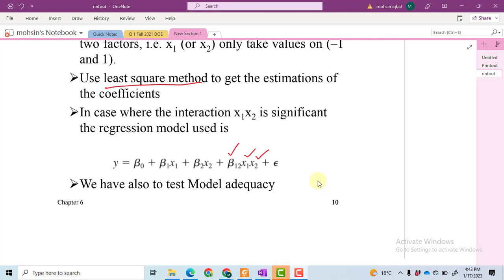Further, if these slopes beta 1, beta 2, or beta 1 2 have a positive sign, it means they have a positive effect on the response variable. And if there is a minus sign in place of this plus, it means that those factors or parameters have a negative effect on the response variable y.